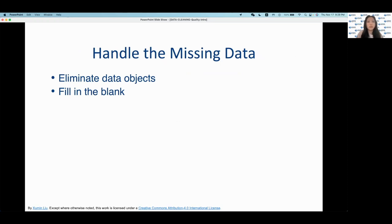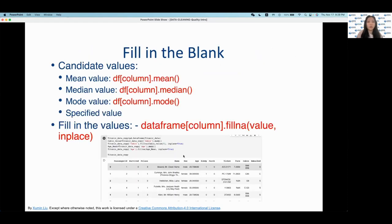So another way to handle missing data is by filling in the blanks. And some common options for filling in the blank include using the mean, median, and mode values. And you can get these values through these various functions here. You can also specify a value to replace the null value. And to fill in these null values, you use data frame column dot fillna and then whatever value and then in place here equals true. And so you can see an example on the bottom here where they filled in the null values with the mean age. And then they also filled in the null values within the cabin column with the mode.